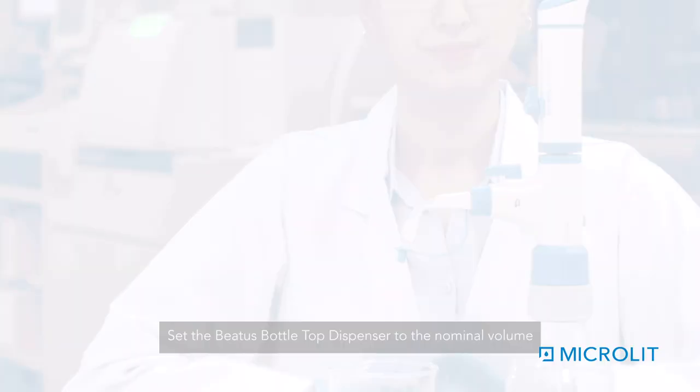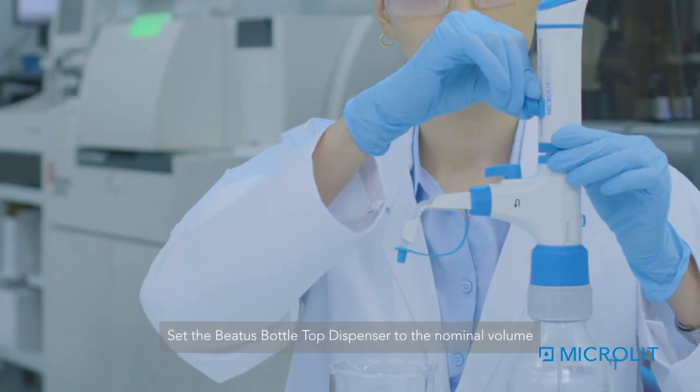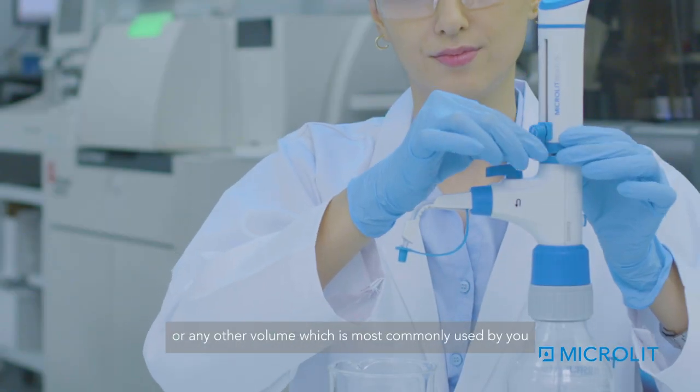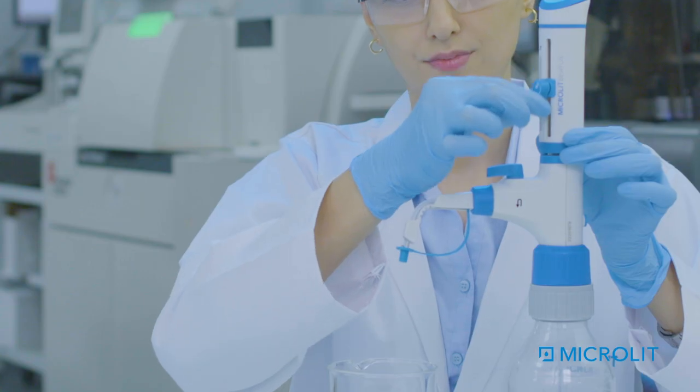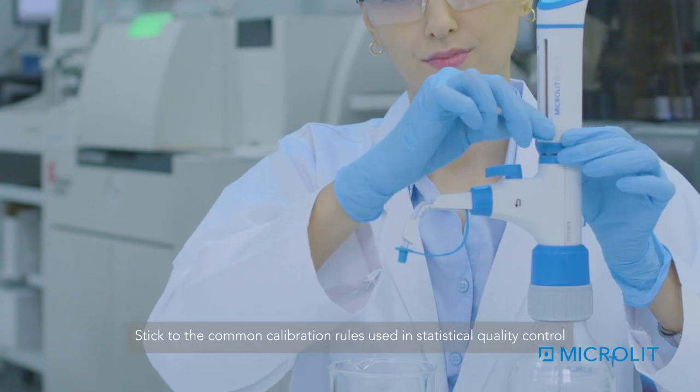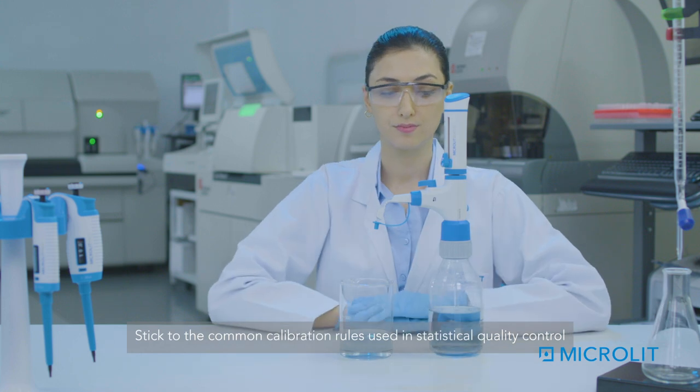Recalibration. Set the Betis Bottle Top Dispenser to the nominal volume, or any other volume which is most commonly used by you. Stick to the common calibration rules used in statistical quality control.